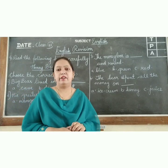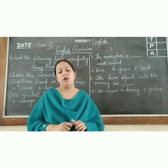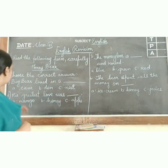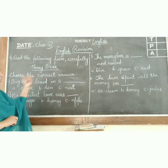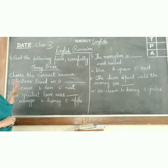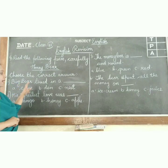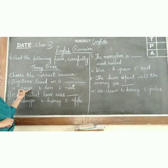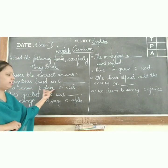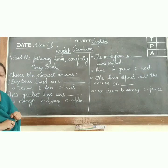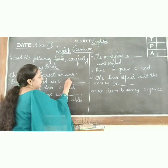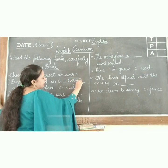You all read the poem, so let us answer the questions. Choose the correct answer and fill in the lines. First one: Big Bear lived in a dash. The options are cave or nest. The answer is cave — Big Bear lived in a cave.